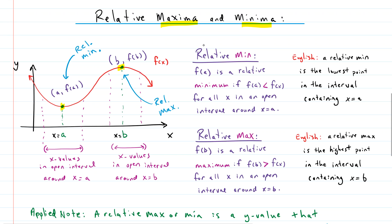Let's talk about the mathematical definition of a relative minimum. If we have a relative minimum, that means f(a) is a relative minimum. f(a) is the y-value for this point. f(a) is a relative minimum if f(a) is less than f(x) for all x in an open interval around x equals a. Let's break that down and figure out what it means.